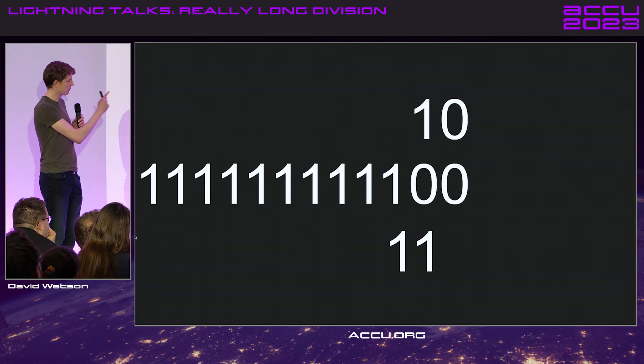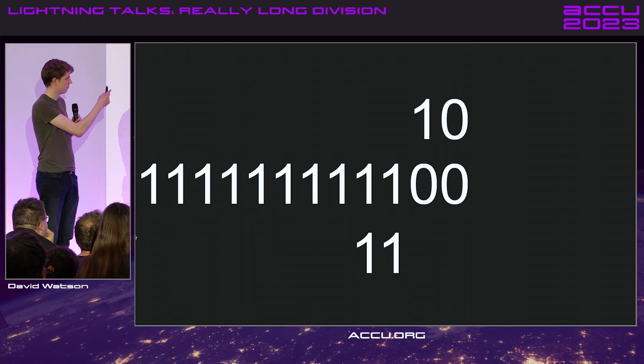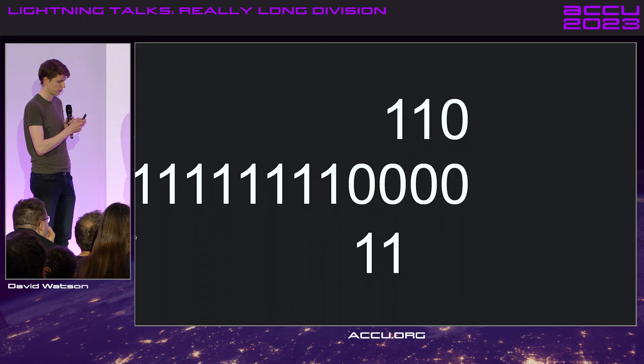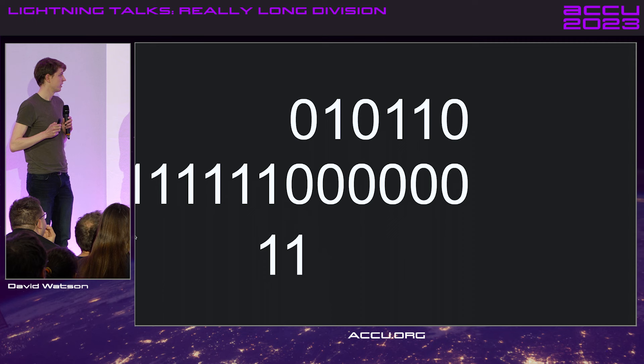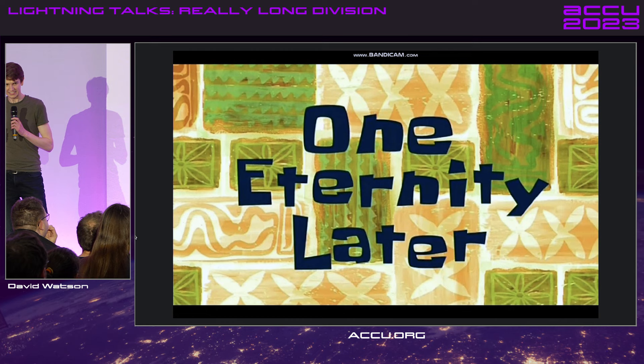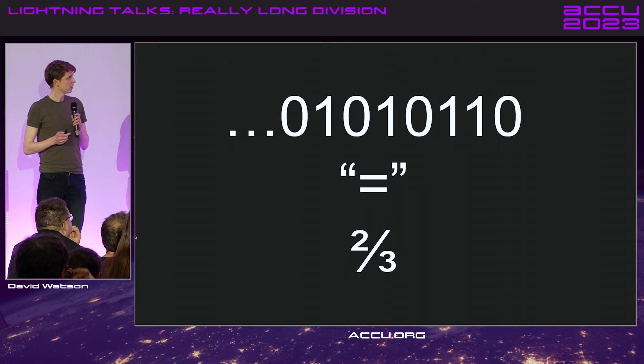Well, this is quite easy. Three goes into one, one time — so we've got one there. And now we've got zero. Shift across. One goes into zero, zero times. Shift. This could take a while — we'll skip that again. And eventually we get this pattern. And that's quite pretty, really.